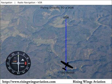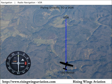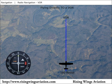To fly directly to a VOR, with the needle centered with a TO indication, turn the aircraft to the bearing on the top of the VOR receiver display. Since the VOR is displaying the direction to the station and your airplane is flying that heading, you will be heading directly to the VOR.